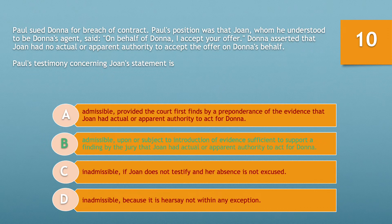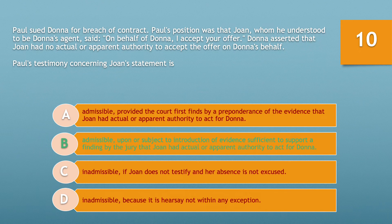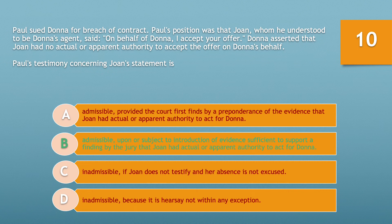If you chose B — admissible, upon or subject to introduction of evidence sufficient to support a finding by the jury that Joan had actual or apparent authority to act for Donna — you'd be correct. The rule under the vicarious party admissions exception to hearsay is that a statement made by an agent that concerns a matter within the scope of the relationship, and made during the principal-agent relationship, is admissible because it is not considered hearsay under the federal rules of evidence — it is, in fact, an exemption. This testimony would be admissible as a vicarious party admission, assuming that Joan was actually Donna's agent. The evidence required prior to the introduction of Joan's statement would be evidence sufficient to support a finding by the jury that Joan had actual or apparent authority to act for Donna — i.e., that Joan was, in fact, Donna's agent.